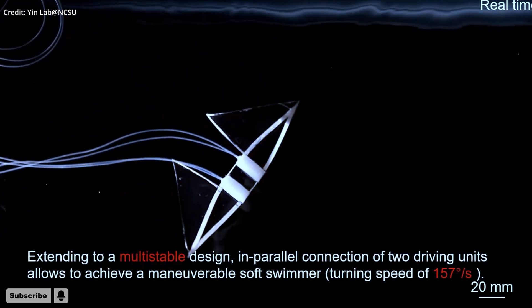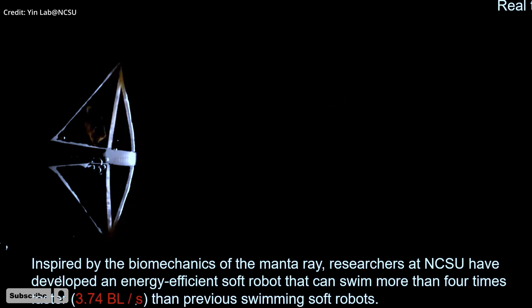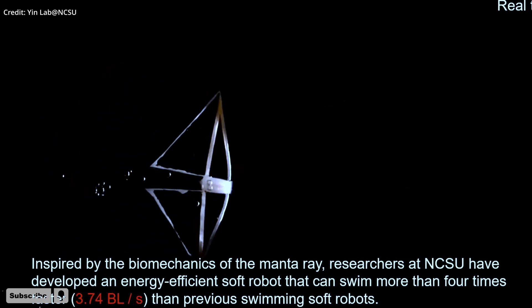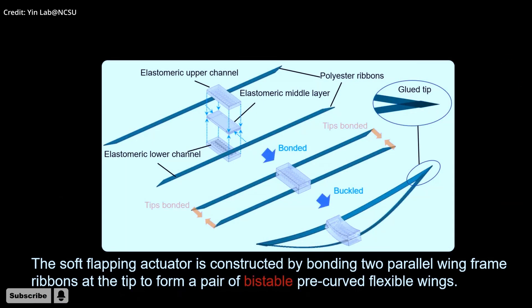The body bends up and down as the chambers inflate and deflate, which forces the wings to move back and forth. The corresponding paper, titled Snapping for High Speed and Highly Efficient Butterfly Stroke Like Soft Swimmer, was published in the journal Science Advances.